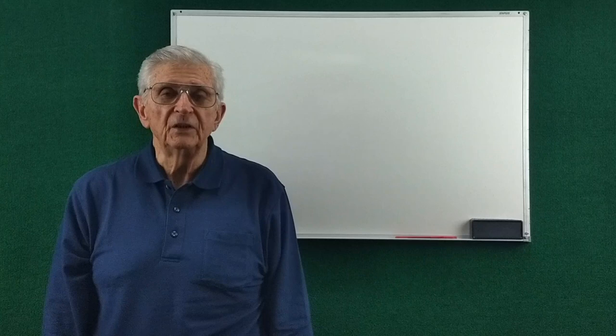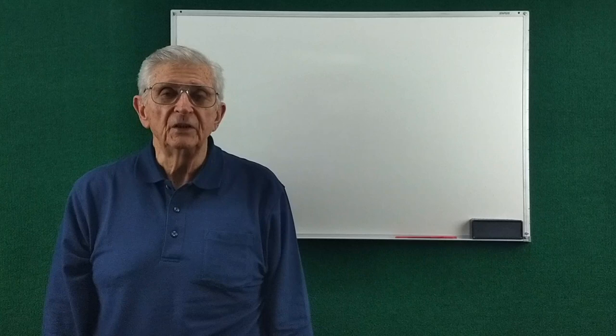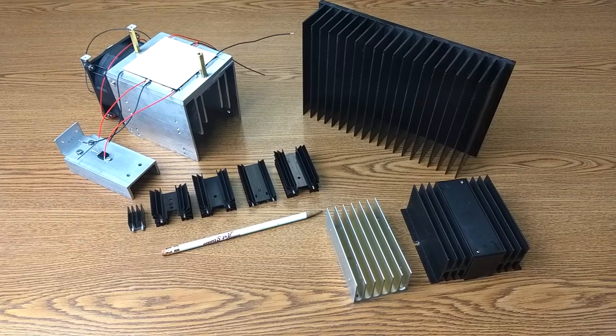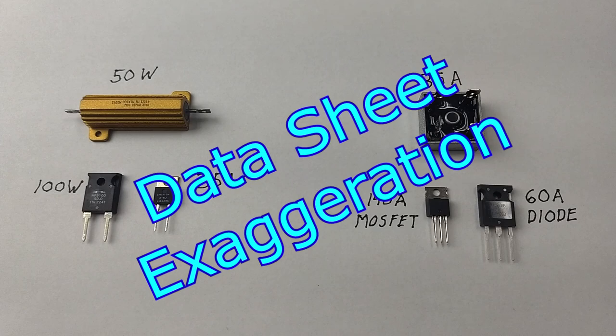That's where we use heat sinks to keep components within their temperature rating. Here is a variety of types of heat sinks. They are used to keep components like the ones shown here within their allowed temperature range.